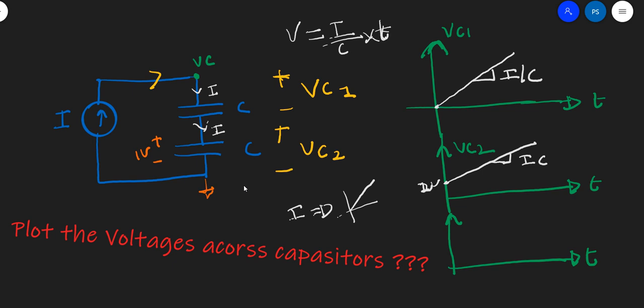If the total capacitance is C by 2, let me write it somewhere here—the equivalent capacitance is C by 2, and what is the current flowing into this equivalent capacitance? I. So what will be the slope? The slope will be I divided by C by 2, so the slope will be 2I by C.